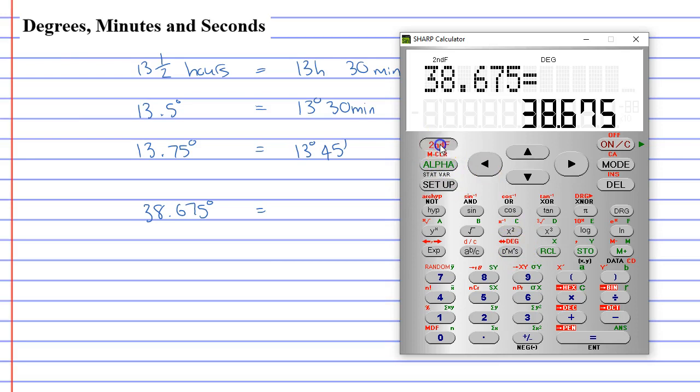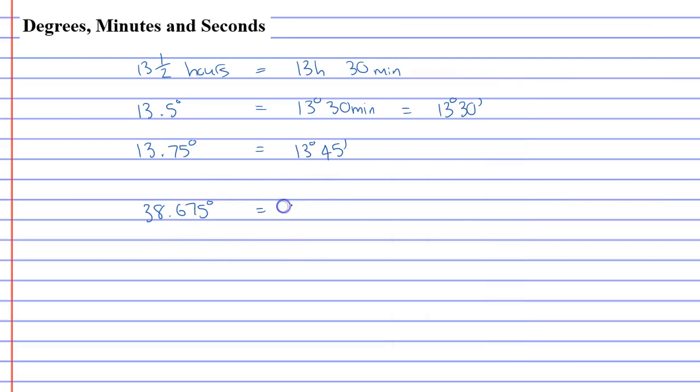And the way this one works is we go second function, DMS, and it will give you your solution. Now, you'll notice it doesn't just have degrees and minutes. It also has the number 30 at the end with a double apostrophe. This represents seconds. So I'm going to write this down. The calculator will disappear once I click on the PowerPoint. So 38 degrees, 40 minutes, and 30 seconds.